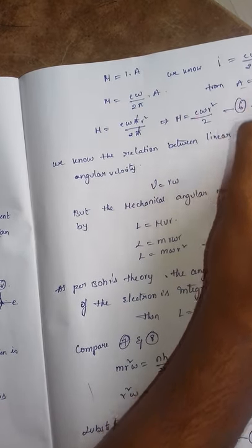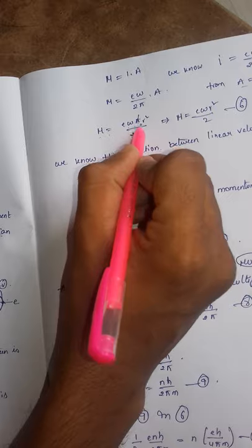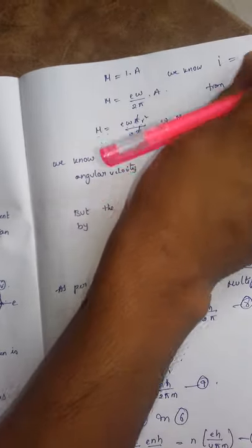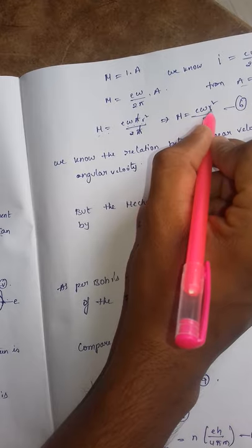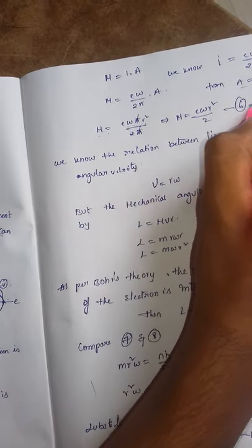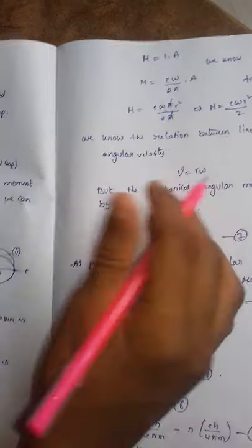We know that A equals to π r squared. So M equals to E omega π r squared by 2π. When we substitute these values in the equation, we can write M equals to E omega r squared by 2. This is the sixth equation.